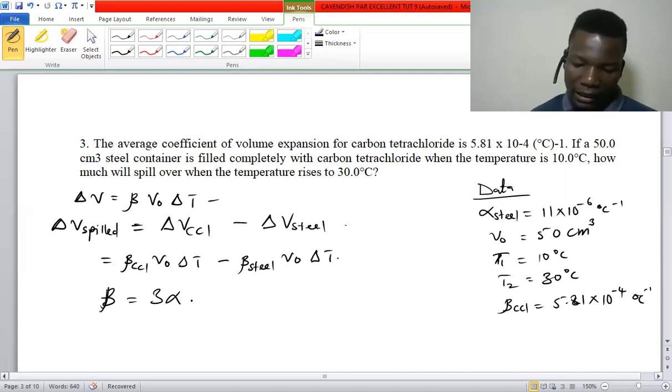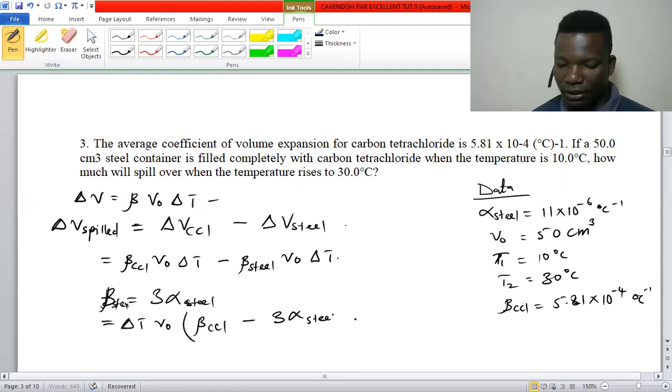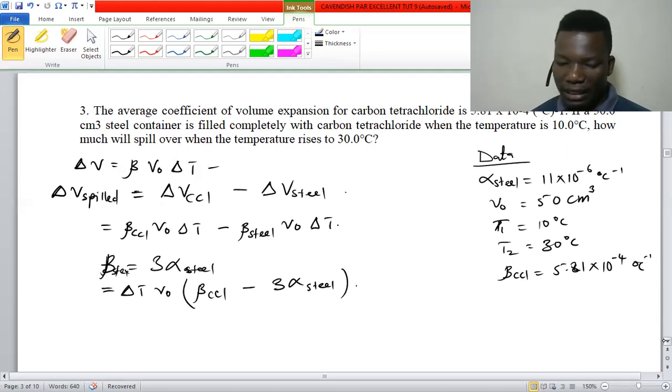Once we plug that, this is steel. So we are going to factor out change in temperature and initial volume, and here we are going to have β_CCl4 minus 3α_steel.